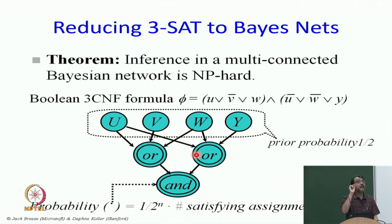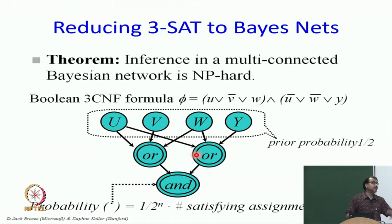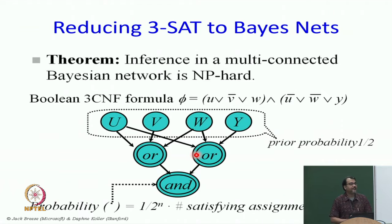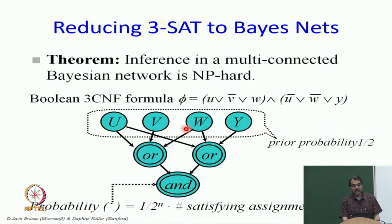You take each logic variable and make a random variable out of it. So u, v, w and y are all random variables, and you give them a prior probability of 0.5 to be true and 0.5 to be false. Then you take each clause and create an OR node. One OR node would be u or not v or w. Another OR node would be not u or not w or y.